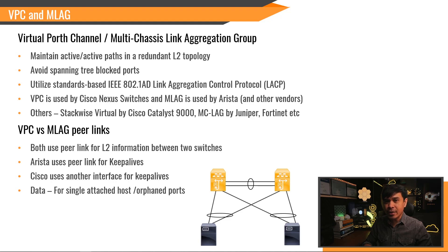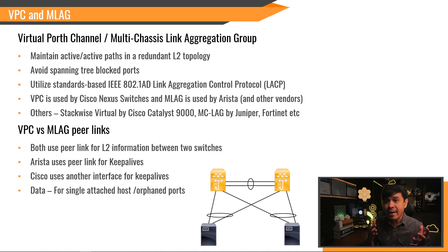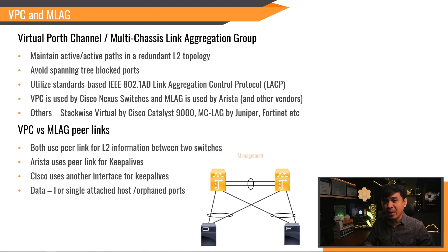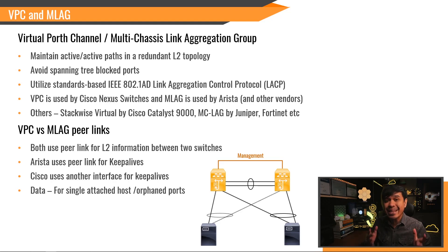VPC vs. MLAG peer links — what's the difference? Both use peer links for Layer 2 information exchange between the two switches. But Arista also uses the peer link for Keepalives. In Arista, the peer link is an SVI, or Switch Virtual Interface, which is a Layer 3 port. Cisco uses Layer 2 interfaces for the peer links and uses a different interface for Keepalives — by default it's the management interface, but you can change this to any port you prefer. The peer link occasionally carries data, but only for single-attached hosts, sometimes called orphan ports.